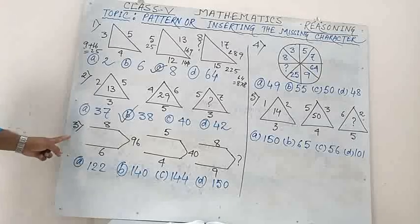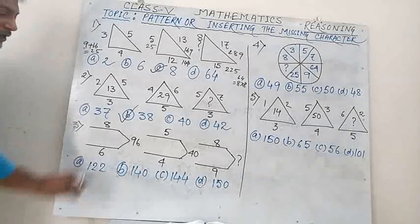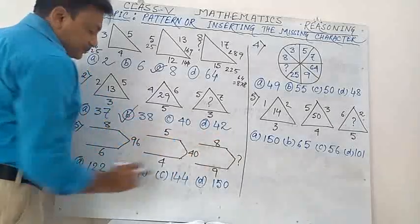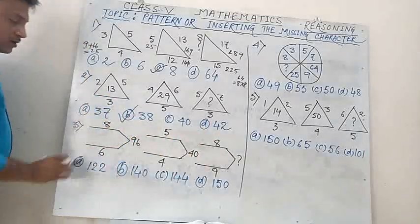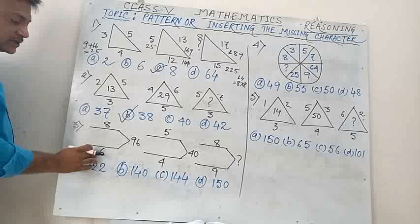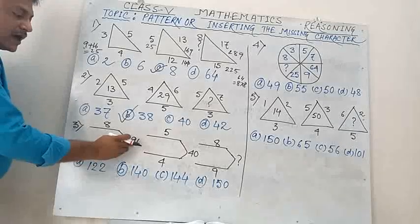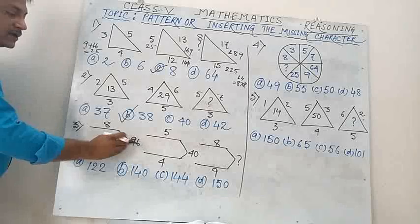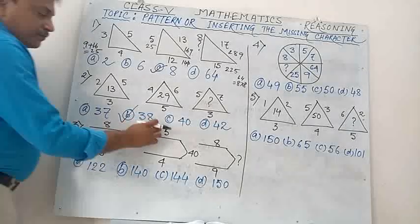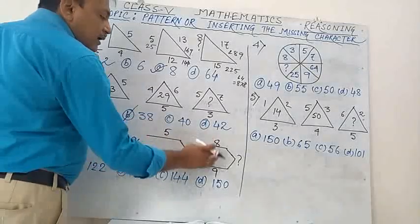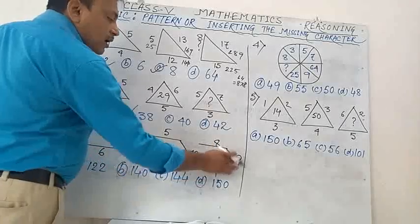Number 3. You can see an arrow-type sign. The sides are 8 and 6, giving 96. Then 5 and 4 giving 40. And 8, 9 giving question mark.